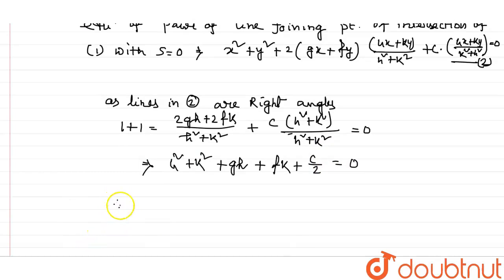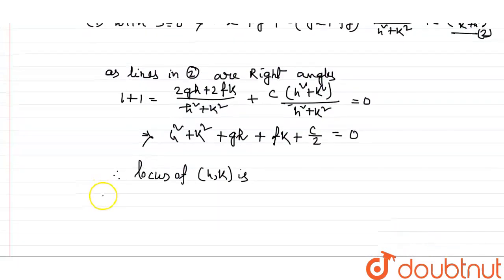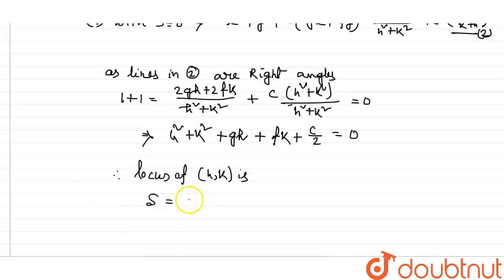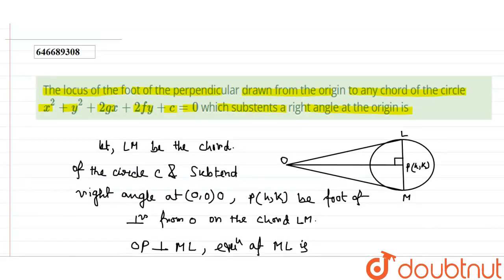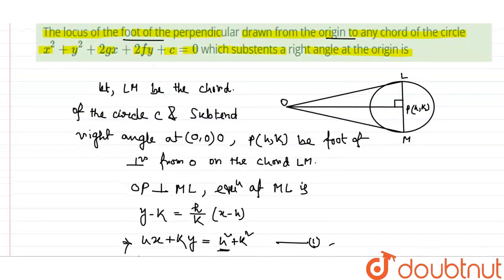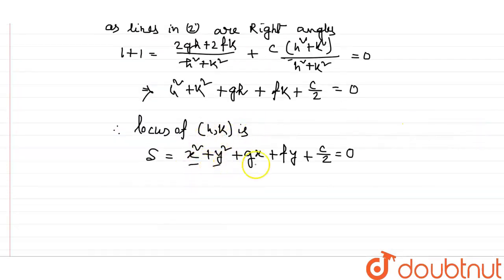So then the locus of H, K is, what is the locus of H, K? That is X square plus Y square plus gx plus fy plus c by 2 equals 0. So what we have to find out, you can see that find the locus of the foot of the perpendicular drawn from the origin, so this is the answer: x square plus y square plus gx plus fy plus c by 2 equals 0.